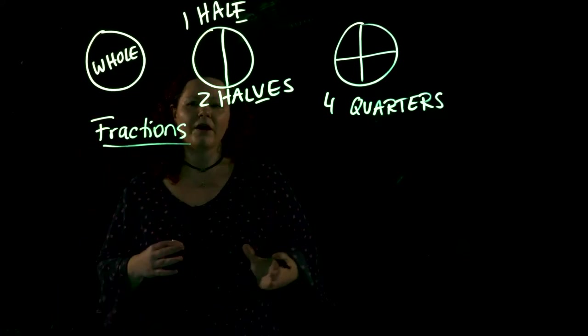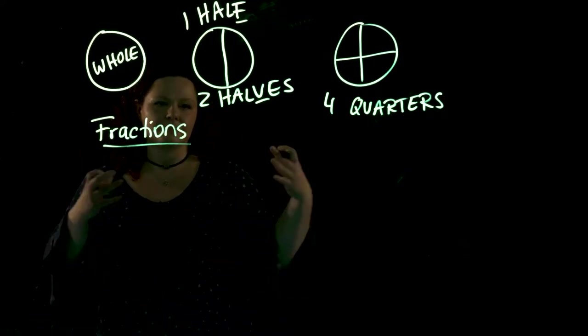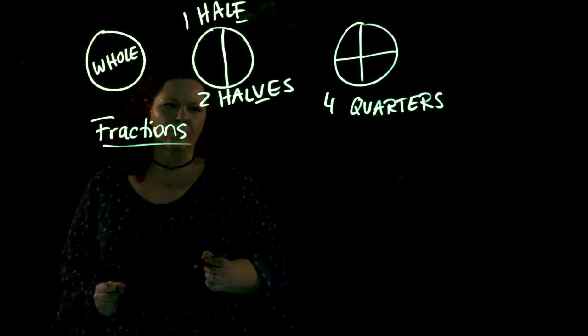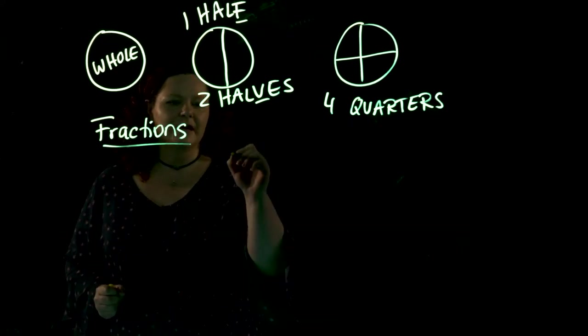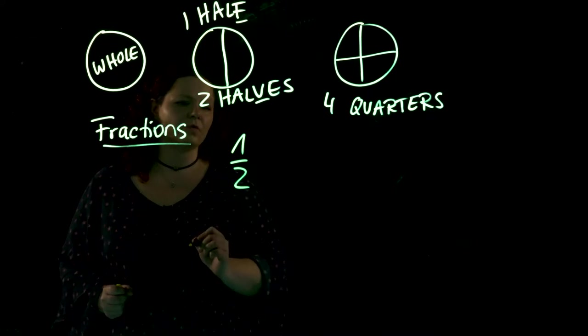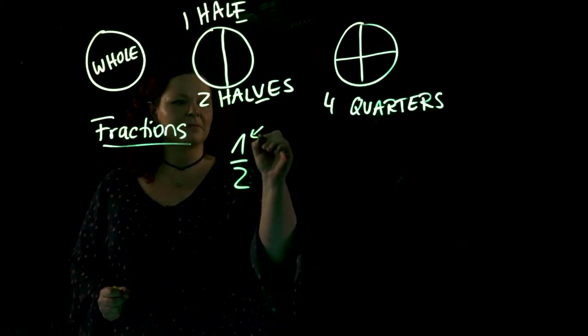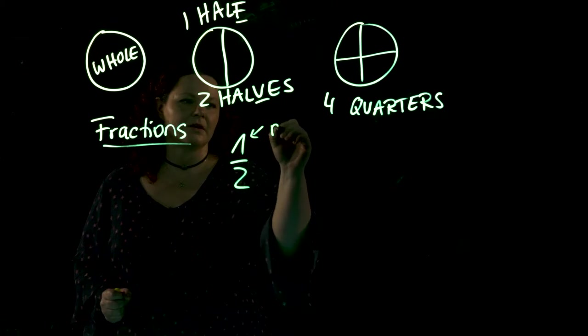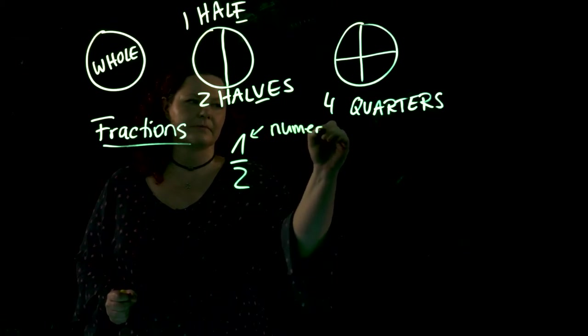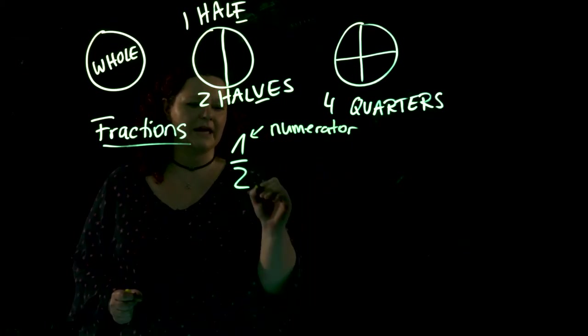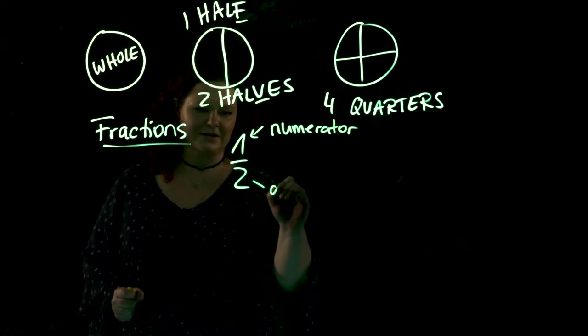So fractions are always a part of a whole or some parts of a whole. So if we have the fraction one half, we call the upper part of the fraction the numerator and the lower part of the fraction the denominator.